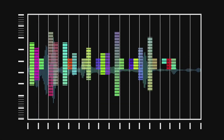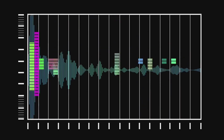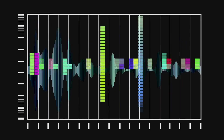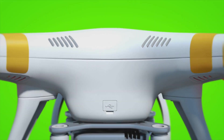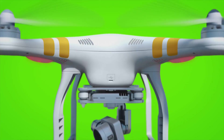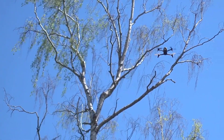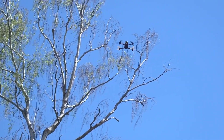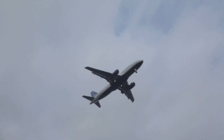Our ANSYS Fluent simulations showed a noticeable difference in noise levels between the toroidal and simple propellers. The toroidal propeller consistently produced lower noise levels across a range of RPMs, meaning quieter flights and happier neighbors. And it's not just about the noise level itself — it's also about the frequency of the noise. The toroidal propeller produced a higher-pitched, less jarring sound compared to the lower-pitched, more intrusive hum of the simple propeller.